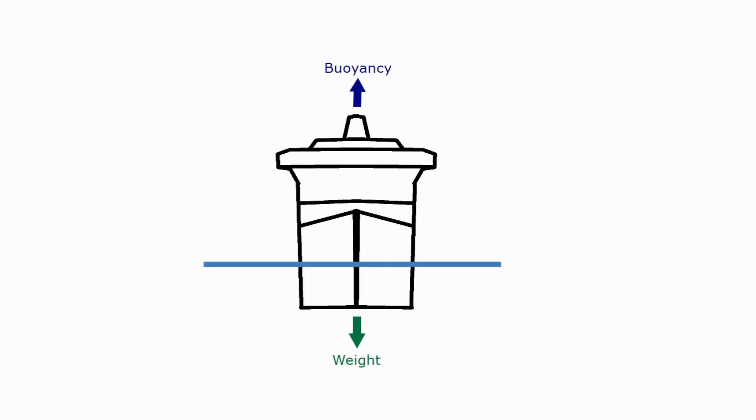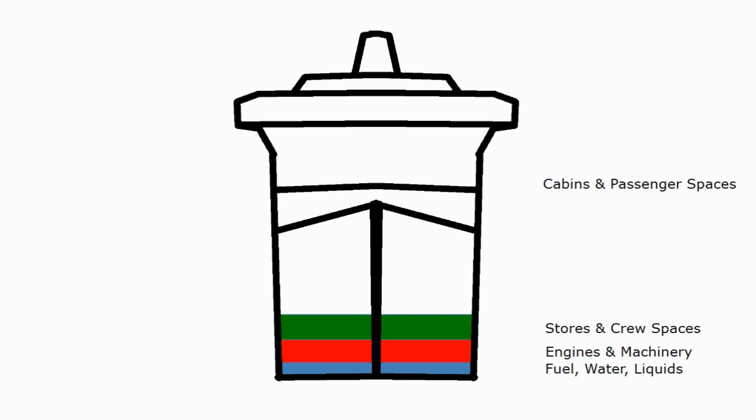But to work out why the ship doesn't tip over we need to think about where exactly these forces are acting, and those points are the centre of gravity for the weight and the centre of buoyancy for the buoyancy. Let's take a look at the centre of gravity first. In this diagram I've just added a few colours for different areas of the ship. We're going to be looking for the centre of gravity. Of course if everything in the ship weighed exactly the same the centre of gravity would be slap bang in the middle.